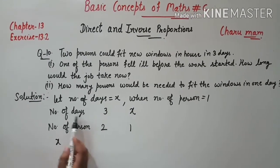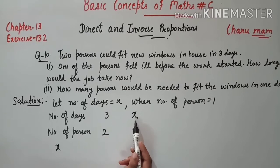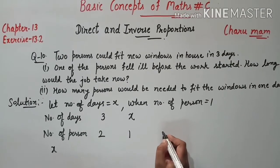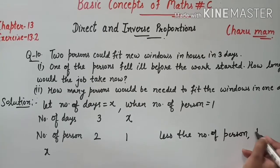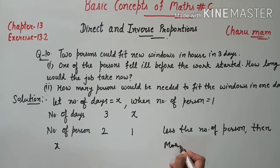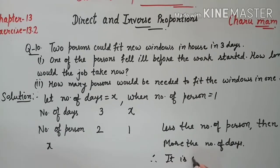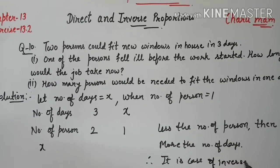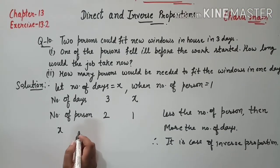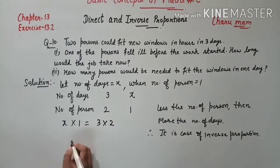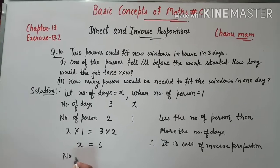अगर number of persons कम हो जाए तो उसी work को complete करने में ज्यादा time लगेगा — less the number of persons, more the number of days. Therefore, it is a case of inverse proportion. So x × 1 = 3 × 2. x = 6. Number of days कितने आए: 6 — यानि 1 person उसी काम को 6 days में complete करेगा।